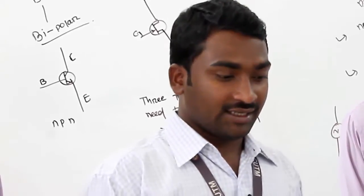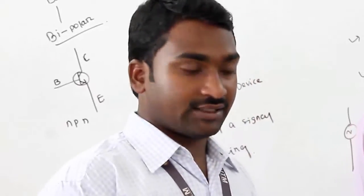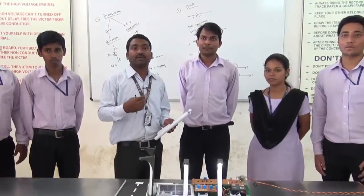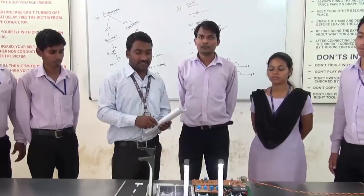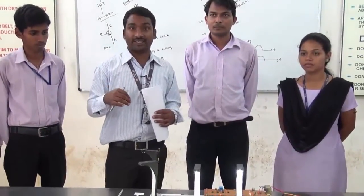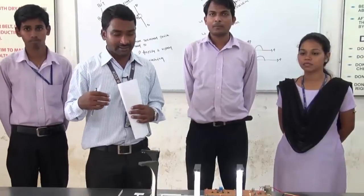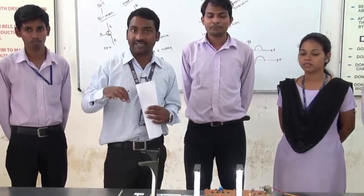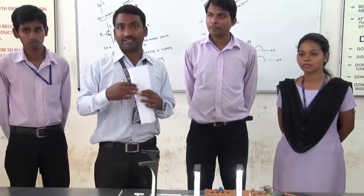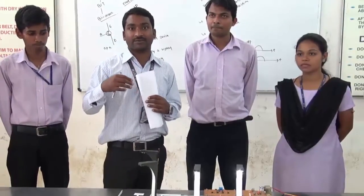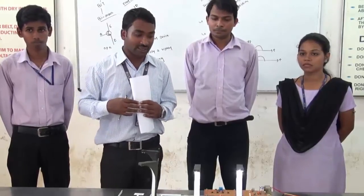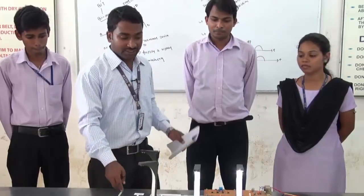Here is another project done by final year students. This project controls street lights automatically depending on the density of vehicles. If a vehicle is present and it is nighttime, the street light will glow. If there is no vehicle, the street light will not glow, and this way the project will save energy consumption.